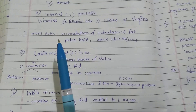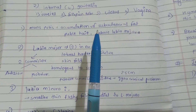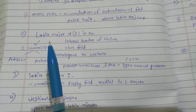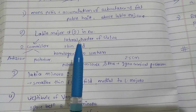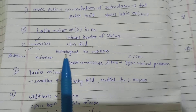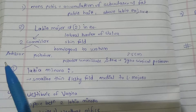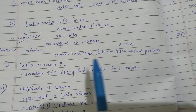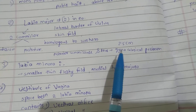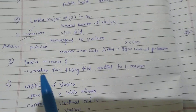The first structure of external genitalia is the mons pubis. It is the accumulation of subcutaneous fat and pubic hair above the labia majora. The labia majora — two in number — form the lateral border of the vulva. It is a skin fold homologous to the scrotum. It contains two commissures: anterior and posterior. The space between the posterior commissure and the anus is called the gynecological perineum, which is 2.5 cm.